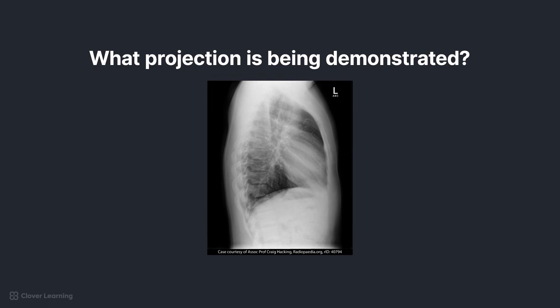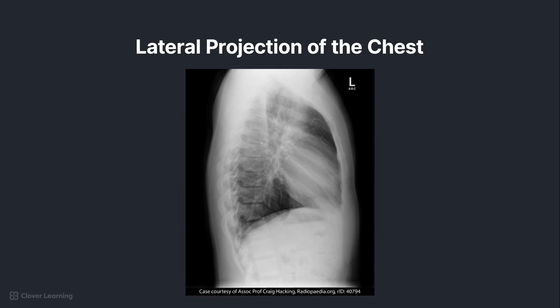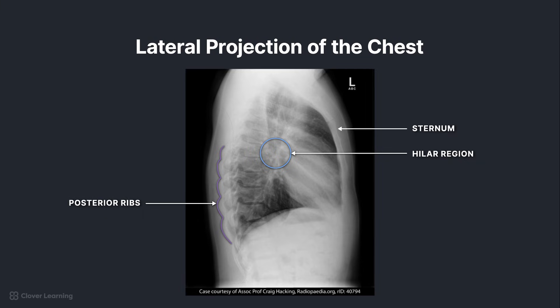What projection of the chest is being shown in this radiograph? If you said lateral, you're correct. This is the only other projection in the series, but how would you know it was lateral just by looking? Well, the evaluation criteria tells us that a true lateral is evidenced by the hila visible in the approximate center of the radiograph, superimposition of the ribs posterior to the vertebral column, the sternum demonstrated in profile, and the trachea visible in the midline.